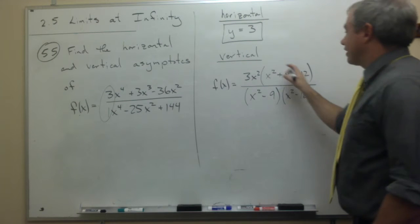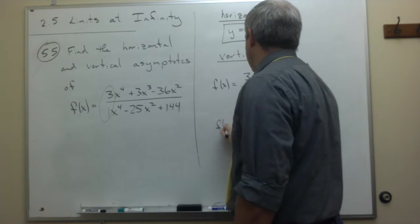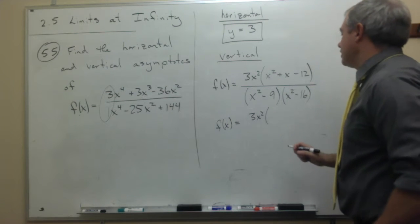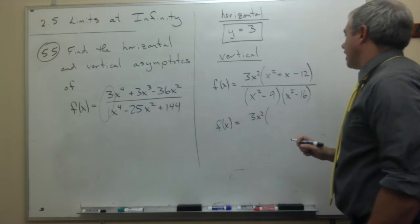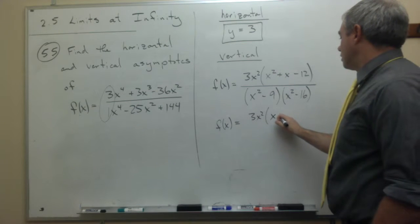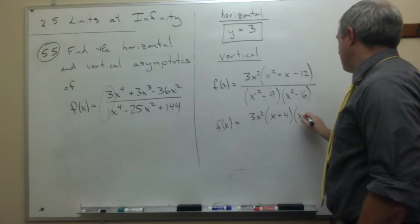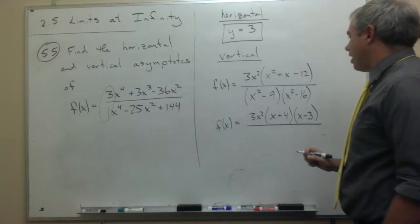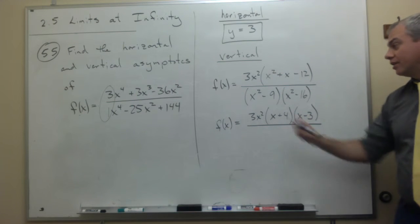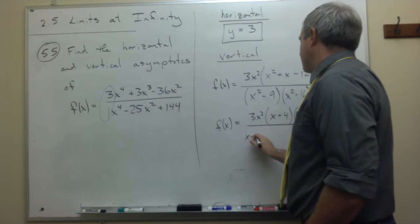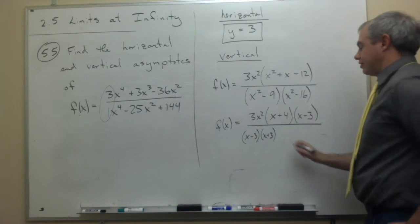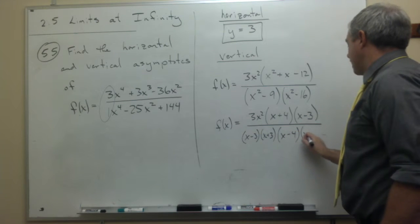So I can factor the top one more time, and I get that f(x) is equal to 3x squared times, this one factors again into, let's see, we've got x plus 4 times x minus 3, and on the bottom, notice that these are both the difference of squares, so they both can continue to factor. So x squared minus 9 can factor to x minus 3 times x plus 3, and x squared minus 16 can factor to x minus 4 times x plus 4.